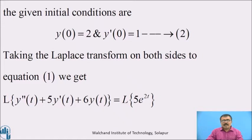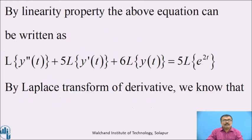Taking the Laplace transform on both sides of equation 1, we get L{y''(t) + 5·y'(t) + 6·y(t)} = L{5e^(2t)}. That is, L{y''(t)} + 5·L{y'(t)} + 6·L{y(t)} = 5·L{e^(2t)}.